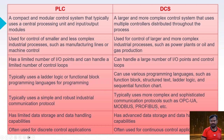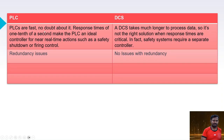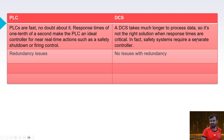PLC uses simple, robust industrial communication protocols like Modbus and Profibus; DCS uses HART, Profibus, and Ethernet depending on requirements. PLC has limited data storage and memory capacity with no archiving computers; DCS has full data storage and handling capabilities. PLC is faster — with response times of around one-tenth of a second, making it ideal for near real-time actions like safety shutdowns and firing controls. DCS takes longer to process data and is not ideal for critical response time applications, which may require a separate safety controller.